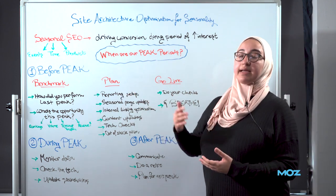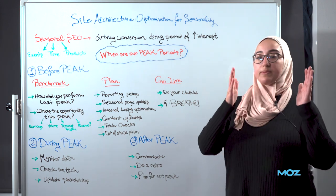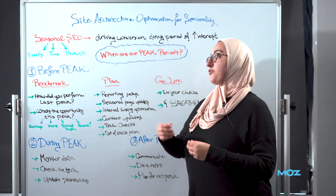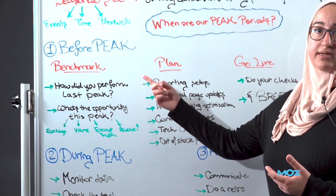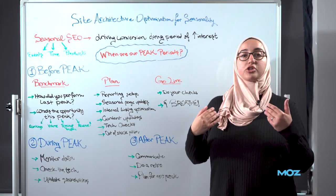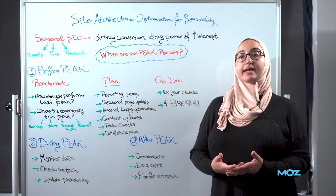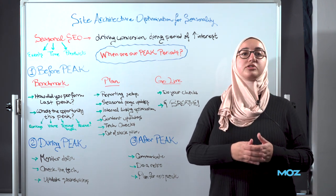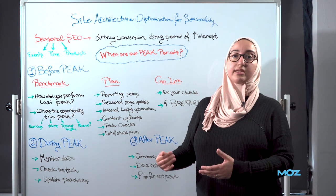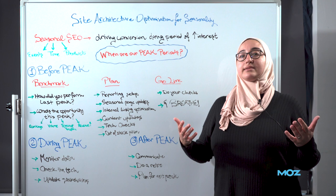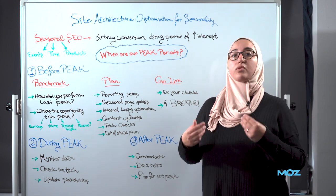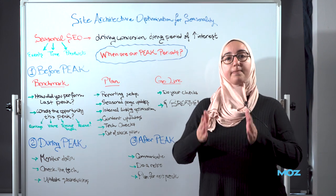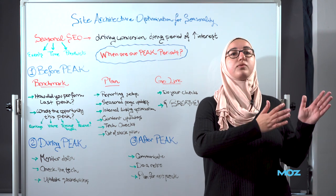Let's start with before peak. It's the idea of splitting everything into what we benchmark first, then what we plan, and then what happens when we go live. When we talk about benchmarking, the first question we usually ask is: how did you perform last peak? It's important to have benchmark data in place to understand what our traffic was like, what our revenue was like, how many leads came through. Peak reporting is very different from typical monthly reports — it focuses on actual KPIs that matter to the business, comparing this peak with a previous peak period.